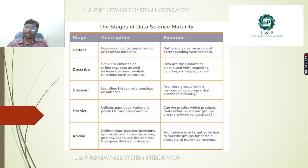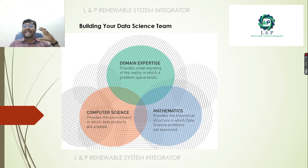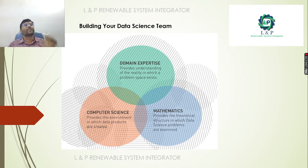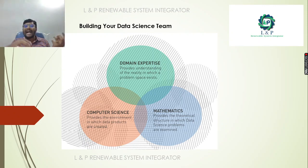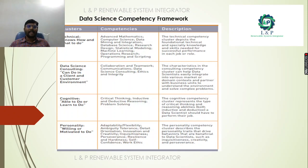How to build your own data science team: you need three things. First, computer science, which provides the environment in which data products are created. Second, mathematics, which provides the theoretical structure in which data science problems are explained. Third, domain expertise, which provides the understanding of the reality in which the problem space exists. You need a team where one member may come from a computer science background, another from a statistical or mathematical background, and domain expertise is critical because data science can be applied to any field.